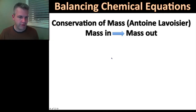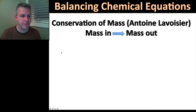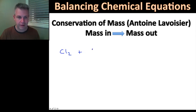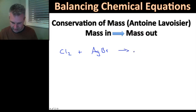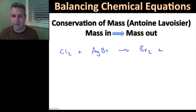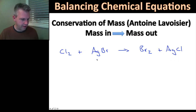Let's do another example — a single replacement reaction. I have chlorine plus silver bromide, and that is going to yield bromine plus silver chloride. I'll leave space here for my coefficients.